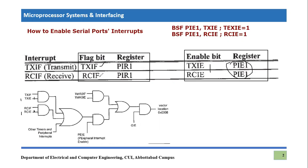Whenever we receive a notification from these two bits, the two flags will become equal to one. These interrupts will flow to a specific gate — since it is an OR gate it won't produce any trouble. However, there is also an AND gate which requires another input to be high, which is PEIE — Peripheral Interrupt Enable.